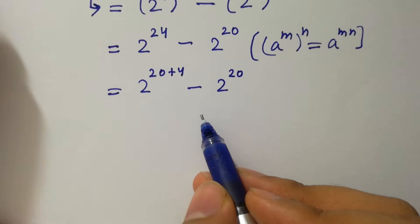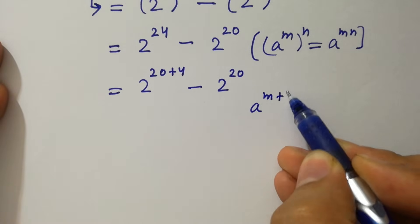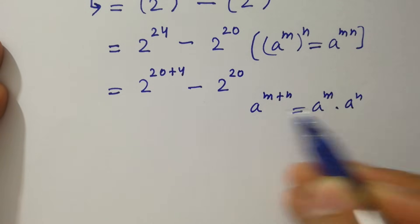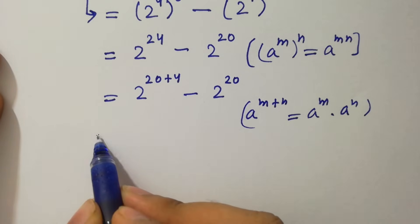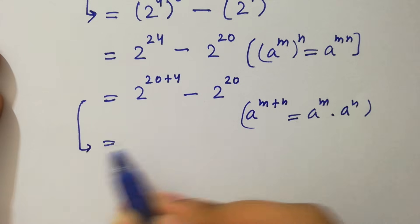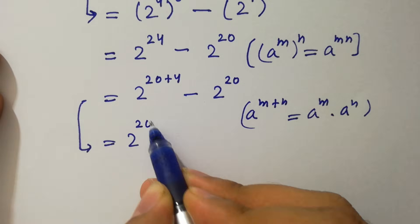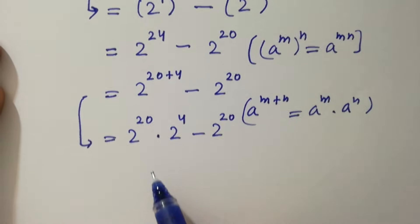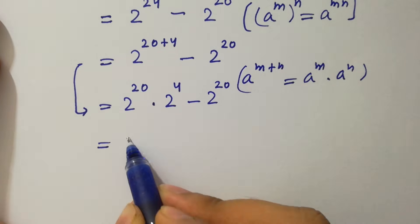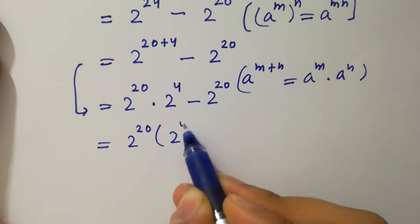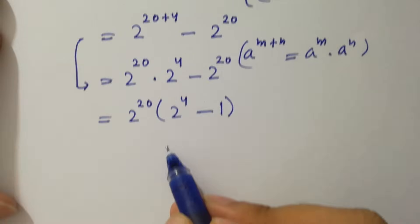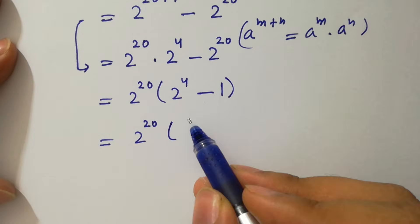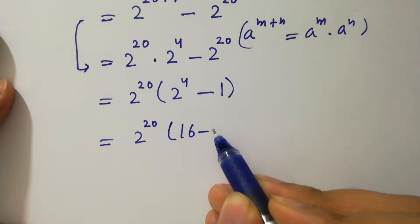Since a to the power (m plus n) equals a to the power m times a to the power n, then it will be 2 to the power 20 times 2 to the power 4, minus 2 to the power 20. Now 2 to the power 20 can be taken as common, giving us 2 to the power 20 times (2 to the power 4 minus 1). Next, 2 to the power 4 is 16, so we have 2 to the power 20 times (16 minus 1).